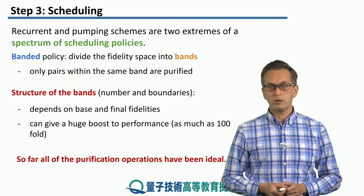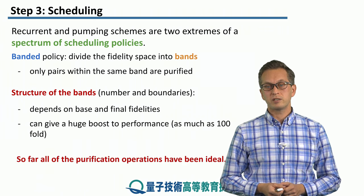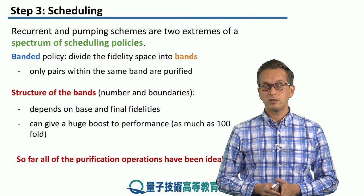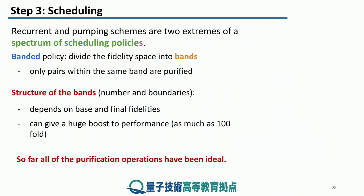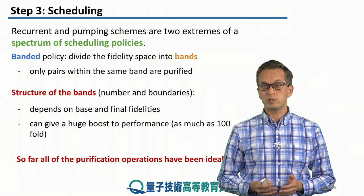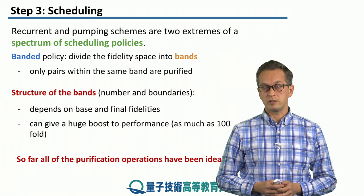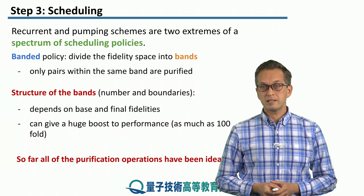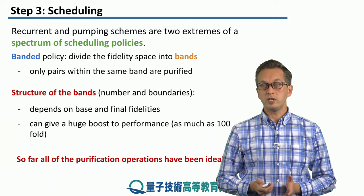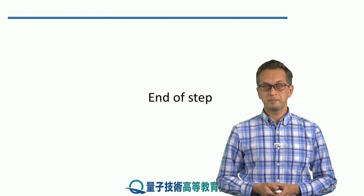So far, all the purifications have been ideal — we haven't talked about errors. All of our CNOT gates and measurements were ideal; they always worked as they are supposed to. In the next step we're going to see what happens when they don't. See you there.